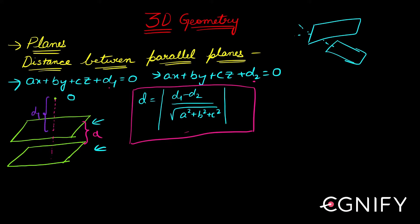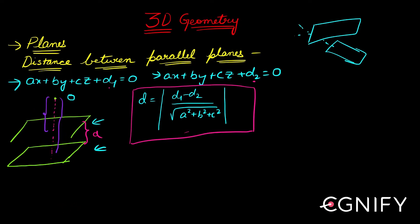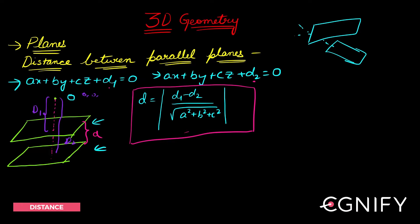If you get this distance D1 and this distance D2 — let me call them capital D1 and capital D2 just to avoid confusion of variables — capital D1 is the distance of the origin from the first plane, and capital D2 is the distance of the origin from the second plane.